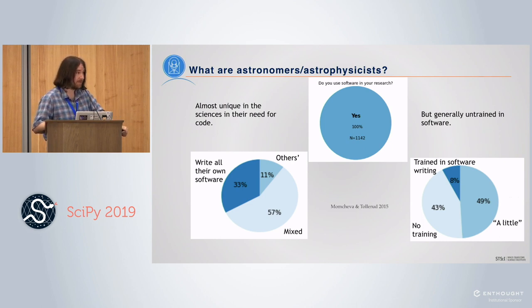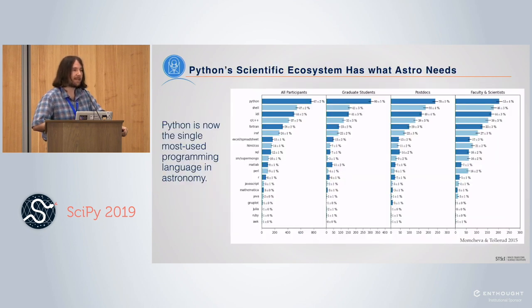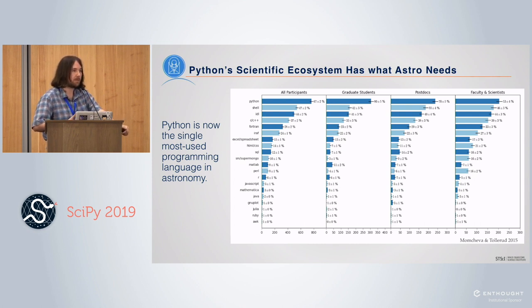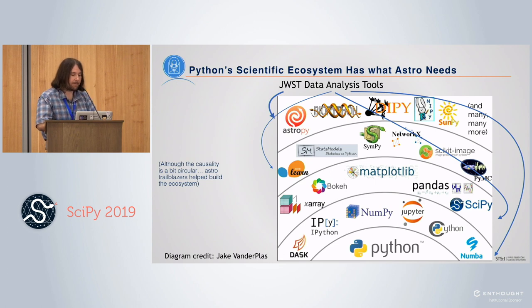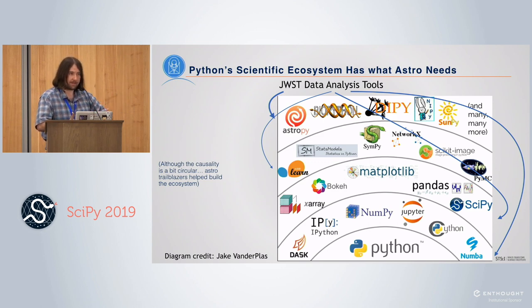Python has ended up being the code of choice that astronomers are now using. As of four years ago, it had already become the single most popular programming language for astronomers, the vast majority of whom write their own software for their science. That was a sea change — five years earlier there would have been a relatively small fraction using Python. There's been a huge shift in the last five to ten years, and the Python scientific software ecosystem has met the needs that astronomers have.